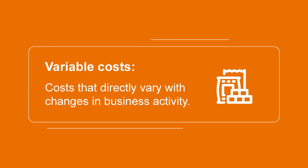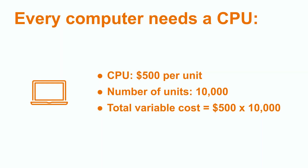Variable costs are those costs that directly vary with a change in the business activity. For example, direct material costs usually increase as production increases. To calculate variable costs, multiply the number of units produced by the cost per unit. For example, every computer needs a CPU, which is a Central Processing Unit. So the cost of the CPU is variable because it depends on how many units you intend to produce.